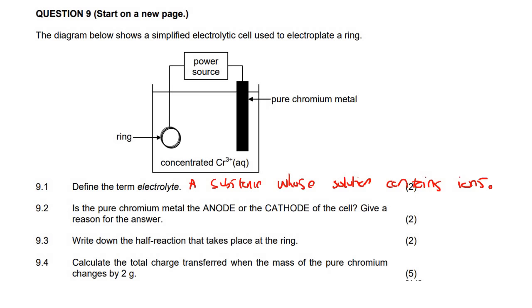Then the next one, is the pure chromium metal, which is this one, the anode or the cathode? Well, what I've always told you guys is that cathode is always the place where reduction happens.